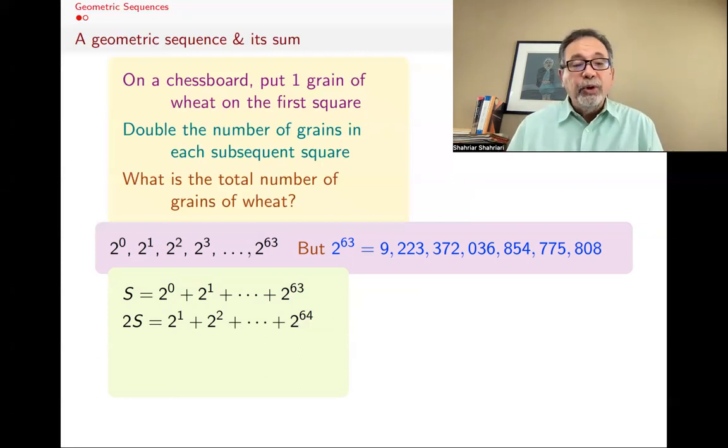Why did we do that? Well, we did that because we then want to find 2S - S. Well, that's also not a surprise. We know what that is. That's just S. If you have two pizzas and eat one of them, you're left with one pizza.